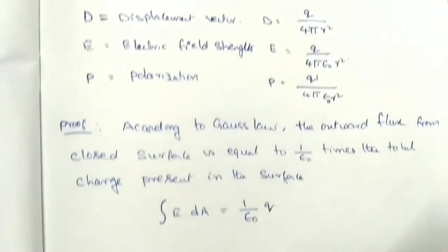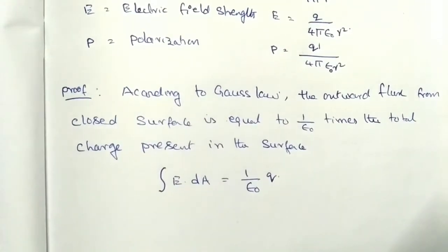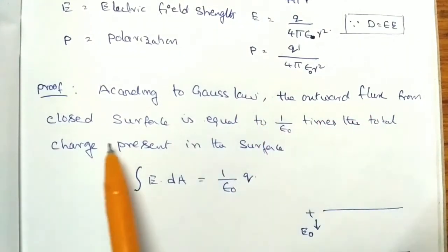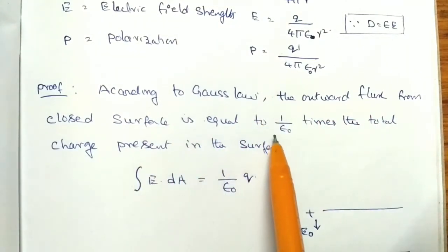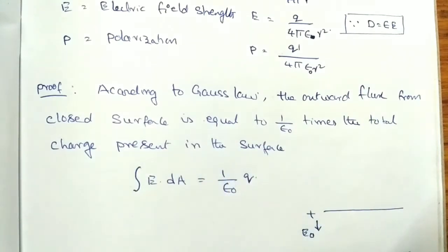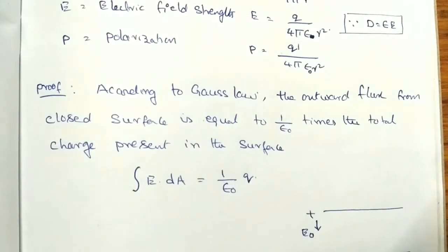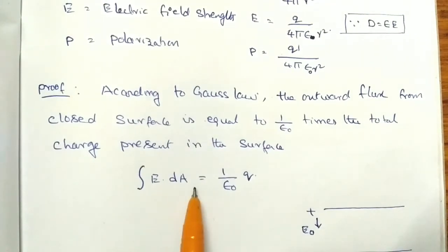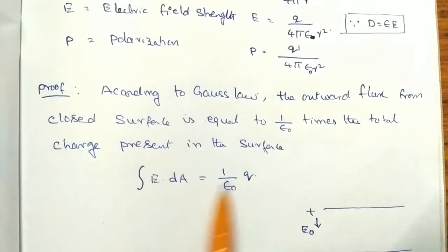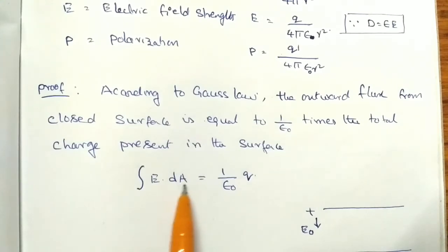Now let us discuss the proof. According to Gauss's law, the output flux from a closed surface is equal to 1 by epsilon naught times the total charge present in the surface. The formula is: integral of E dot dA is equal to 1 by epsilon naught into Q. Here, epsilon naught is the permittivity of free space, Q means charge, dA means a unit area, and E means electric field strength.